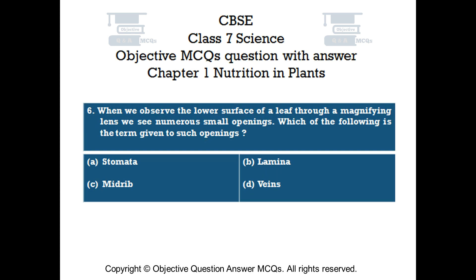Question number 6. When we observe the lower surface of a leaf through a magnifying lens, we see numerous small openings. Which of the following is the term given to such openings? Option A: stomata. Option B: lamina. Option C: midrib. Option D: veins.